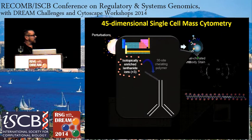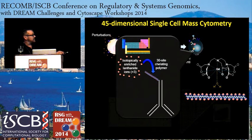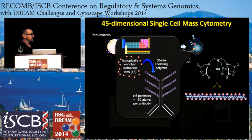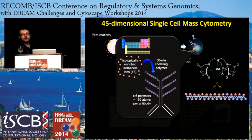To get isotopes onto antibodies, we start with a chelator that captures the ion itself. We have multiple chelators on an acrylamide-like backbone — about 30 chelators per backbone — with the isotope attached. We then attach several of these to an antibody via maleimide chemistry, giving about 80 to 180 atoms per antibody. That is your signal, replacing the fluorophore. Remember the number 180, because it becomes important in a couple of minutes.